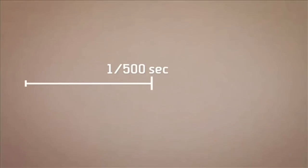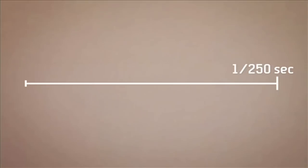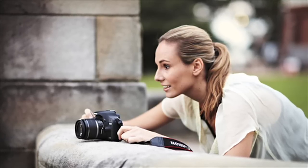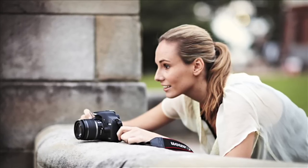Each interval doubles the time the shutter is open for — so you go from 1/1000th of a second, then 1/500th of a second, which then becomes 1/250th of a second, and so on. In daylight, most of your shots will be around 1/125th of a second. Anything slower than 1/60th of a second and you might want to start thinking about using a tripod, or just resting the camera on some stable surface to avoid camera shake.